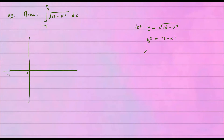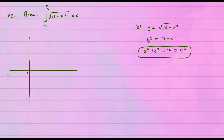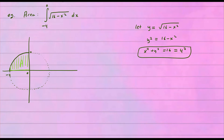Adding x² to both sides gives x² + y² = 16, or 4². That's a circle of radius 4. So you're looking at a circle of radius 4 — from the center, you move 4 units to the left. The circle continues entirely, but we draw the rest as a dotted line because we're only looking at the portion from negative 4 to 0, which is this region right here.